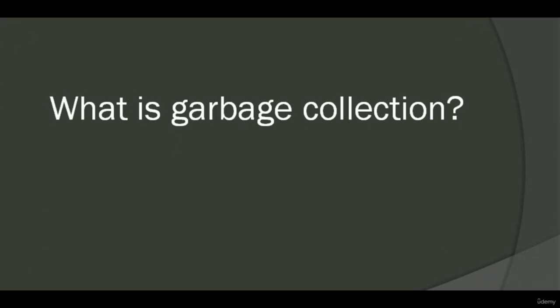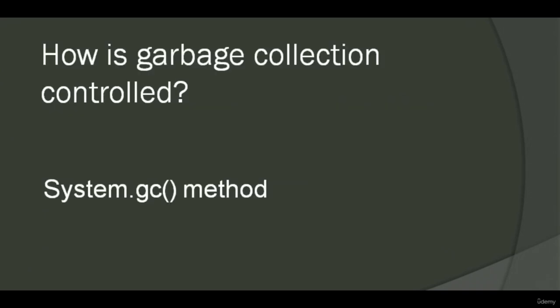What is garbage collection? Garbage collection is an automatic memory management process that frees up memory by deleting the unused objects. In this way, it effectively manages the memory and there is no need for manual destruction or deletion of the object. How is garbage collection controlled? Garbage collection is controlled by JVM (Java Virtual Machine) automatically when there is less memory. We can also control it externally by calling the system.gc() method to clean up the unused objects and free the memory.